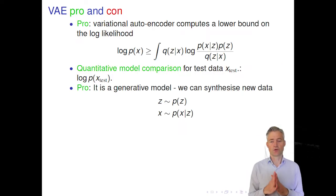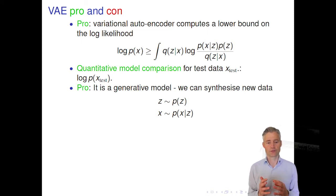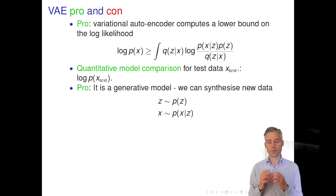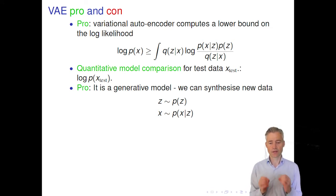First, a little bit about variational autoencoders again as a reminder and motivator. There are two good things about variational autoencoders. First, they are likelihood based. Once we have trained the model, we get a lower bound to the likelihood that we can use as a replacement, and we can use this to measure how well the model describes new data. We get this p(x) lower bound, insert test data, and see what value we get.